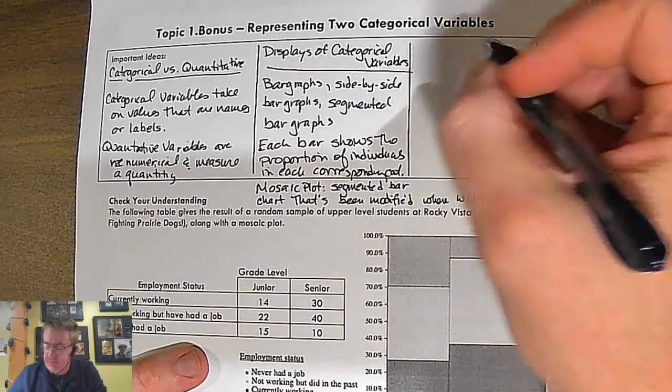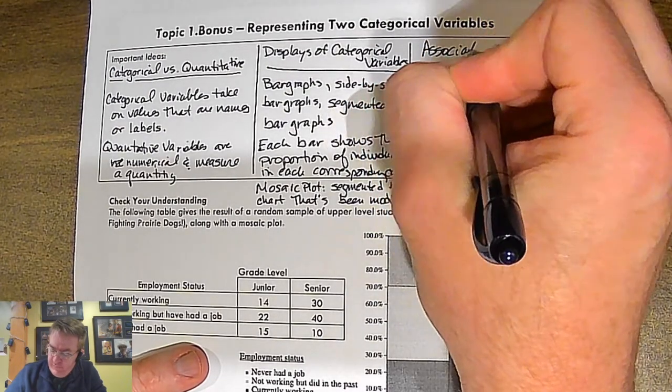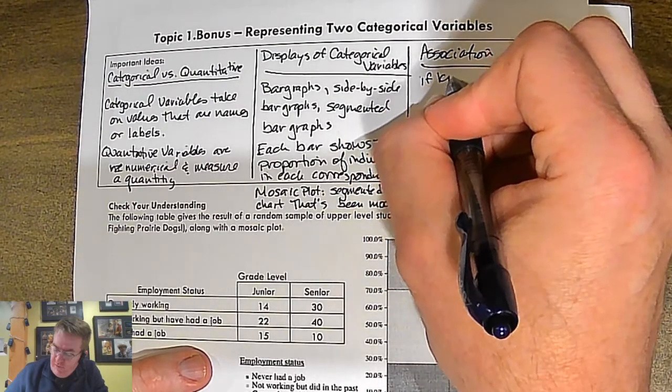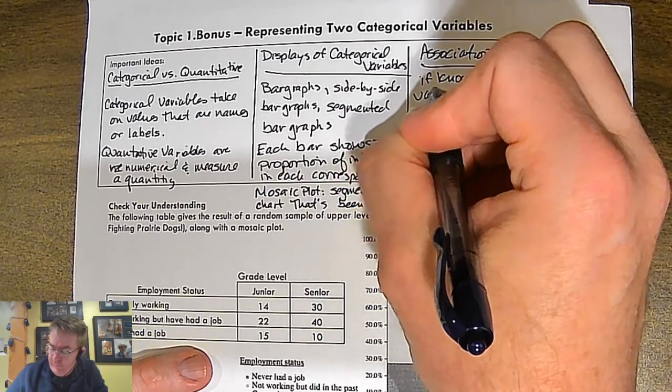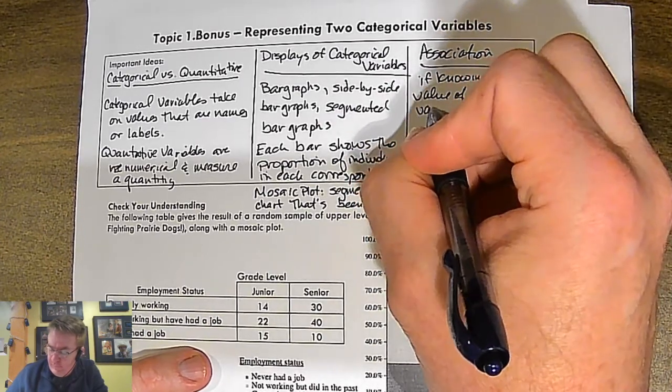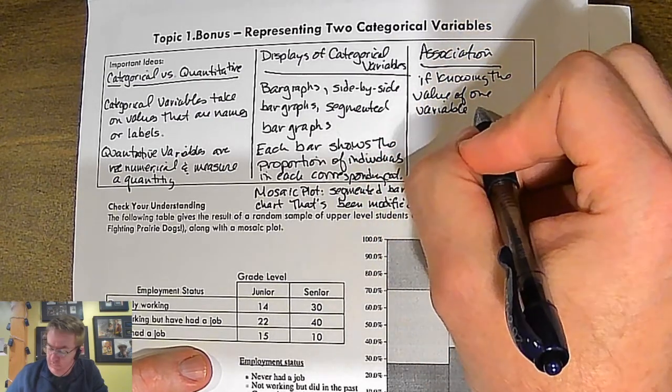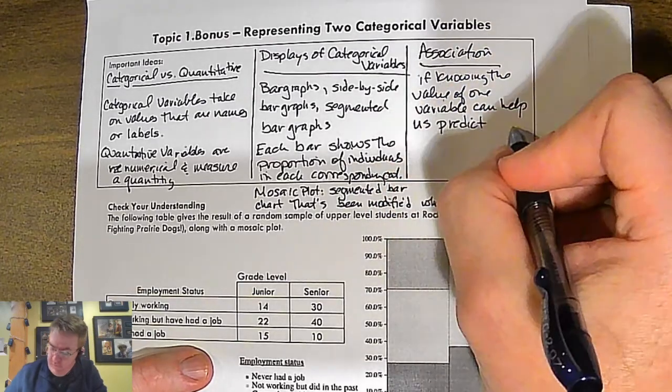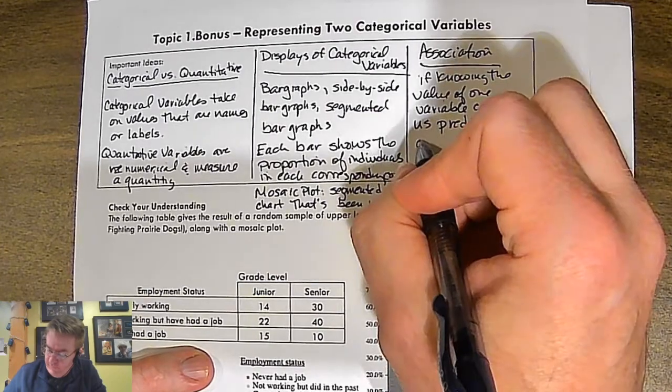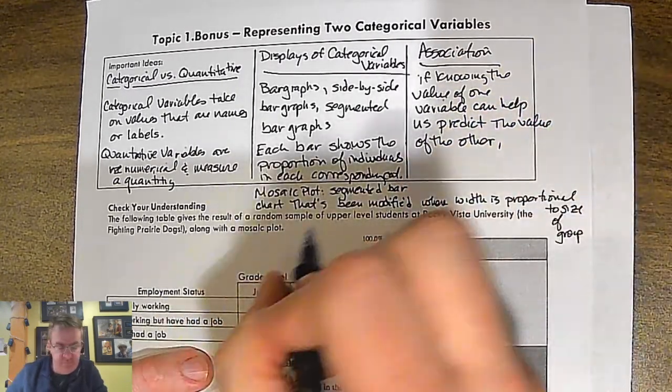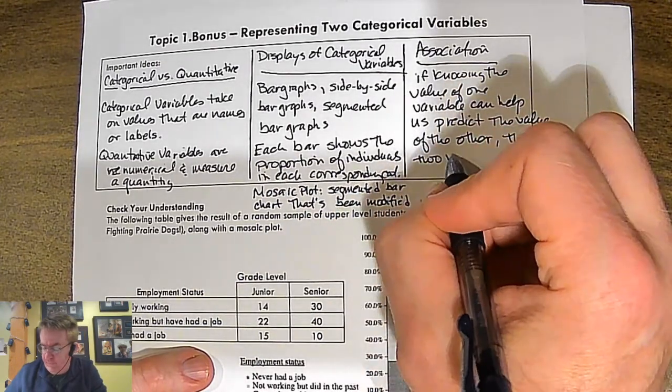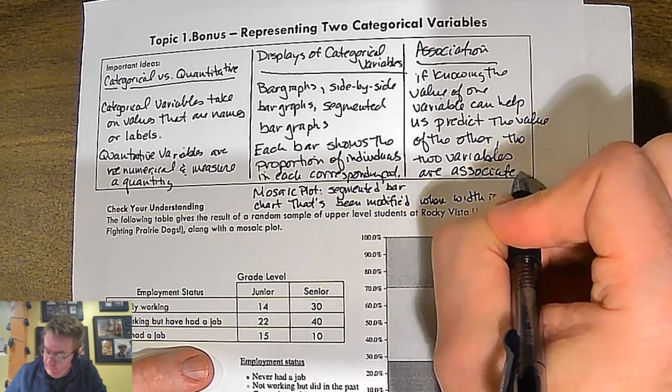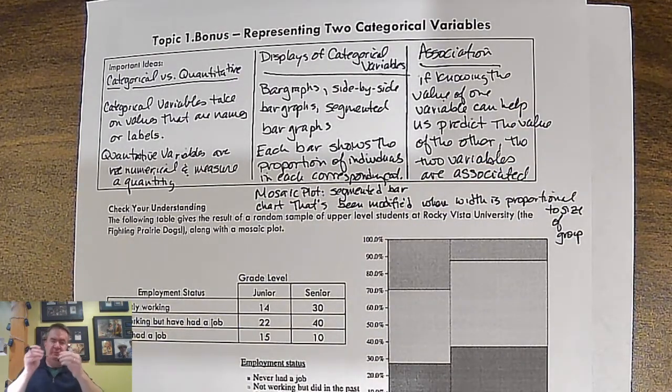All right. Last thing. Association, we kind of touched on yesterday. This is going to be the last one. Knowing the value of one variable helps us predict the value of the other. The two variables are associated. Ta-da. All right. Lots there. Welcome to stats. There's lots of writing.